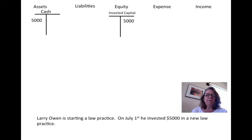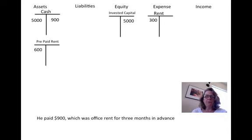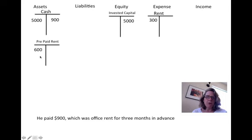The next transaction: he paid $900 for office rent for three months. We recognize a decrease in cash of $900. The first month — $300 — is the only amount we're recording as an expense. The other $600 is prepaid expenses because we're only accounting for the month of July. That $600 is for August and September, so we put it in prepaid rent.